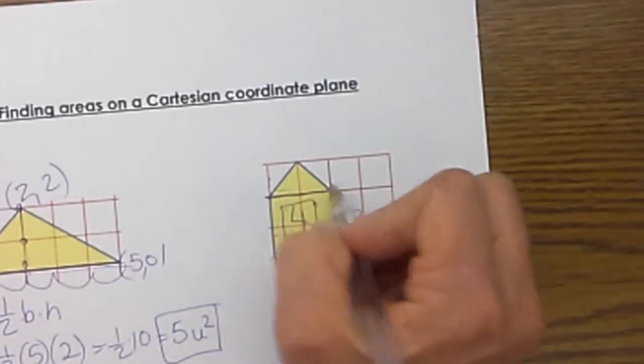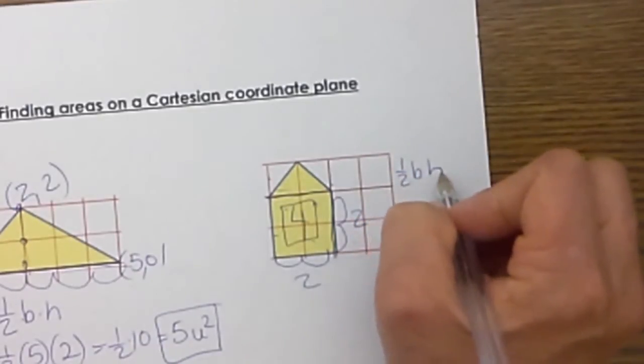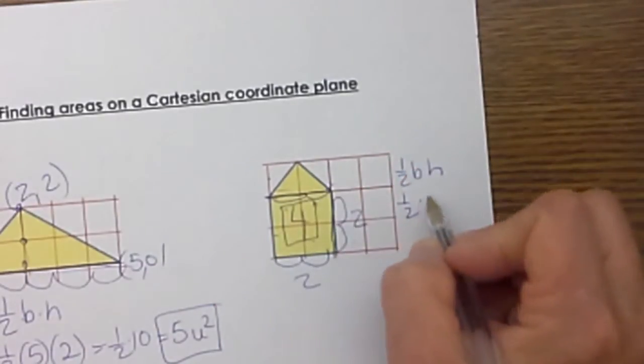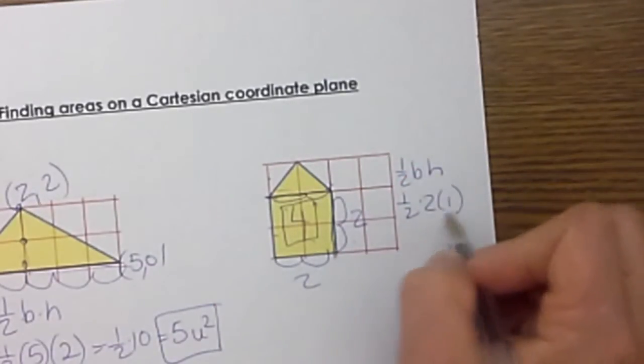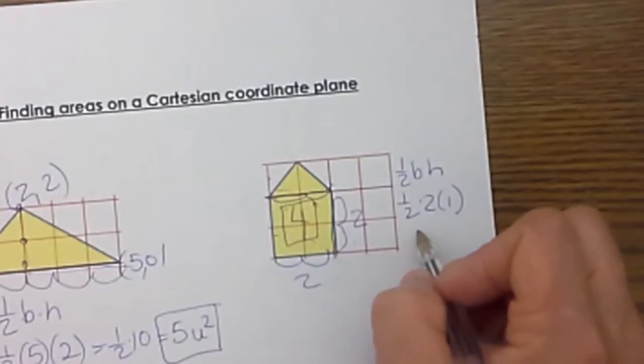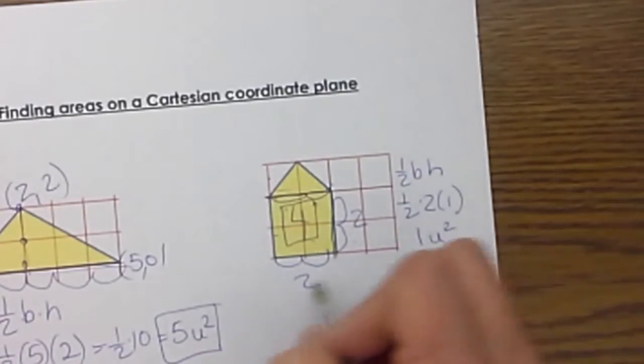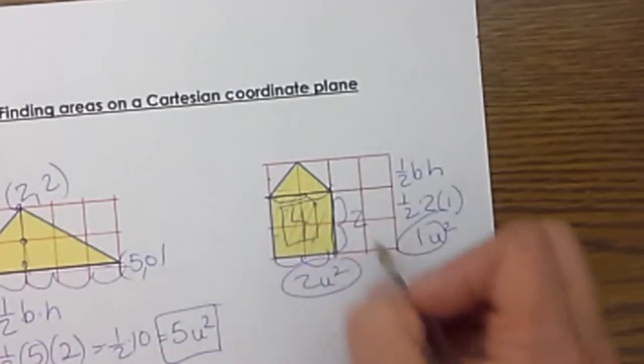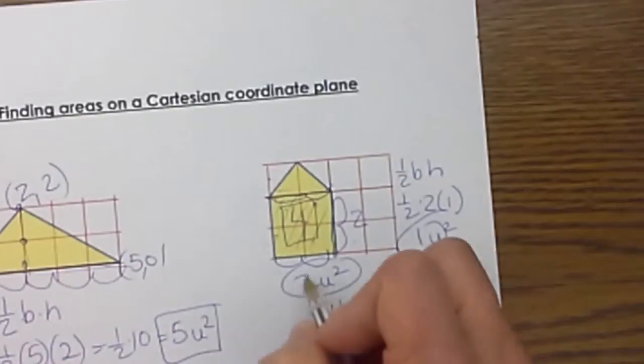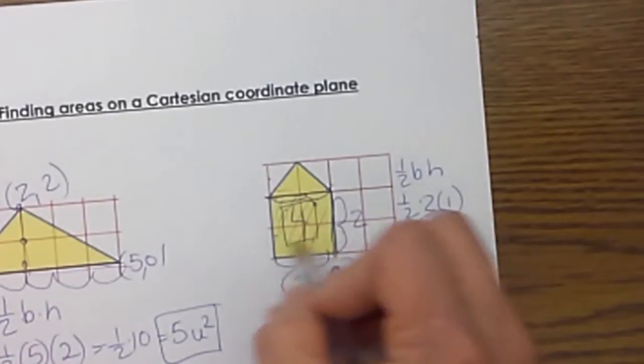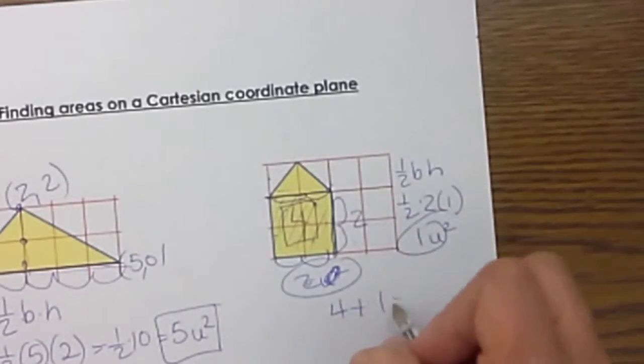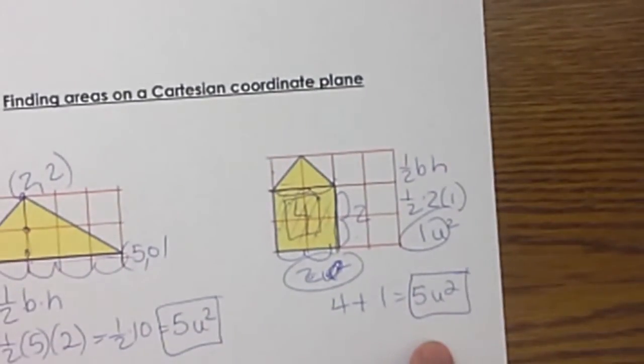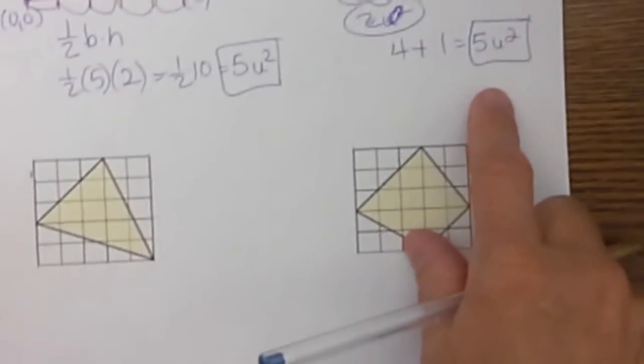Now on top I have a base that measures, remember triangles area is 1/2 base times height, so 1/2, well my base is 2, 1/2, my height is 1, so the area of the triangle is just 1 square unit. Now we are going to take these two and add them together, because we are doing composite figures. The area of the base is 4 square units plus 1 on top, that leaves us with 5 square units for the area, and that is how you find it on a Cartesian coordinate plane.